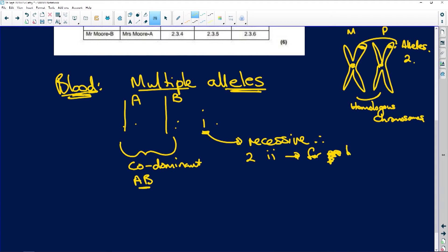For trait to be expressed. Because it's recessive. Whenever you have a recessive trait, you always need two. One from each parent for that recessive trait to be expressed in the phenotype.